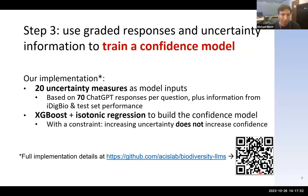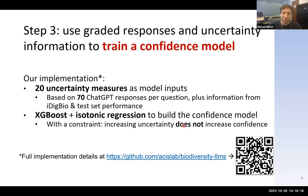To implement the model, we took these uncertainty measures and trained it using XGBoost with isotonic regression. What these do is take the uncertainty measures and learn confidence estimates based on that information. We put one very important constraint on the model: whenever uncertainty increases, confidence cannot increase. So we're coercing it to produce high confidence outputs when uncertainty is low, and low confidence when uncertainty is high.